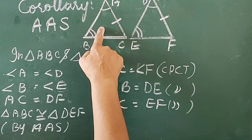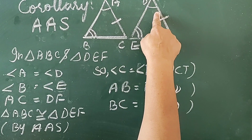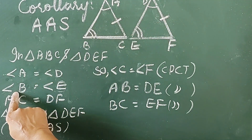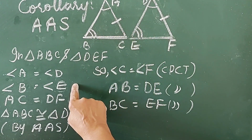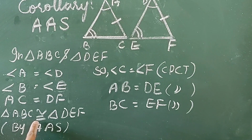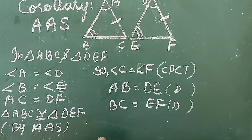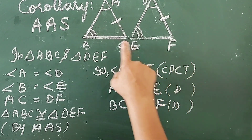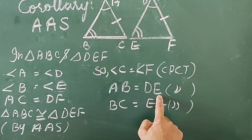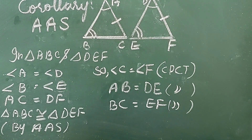Let us consider two triangles: triangle ABC and triangle DEF. From the figures we can write: angle A equal to angle D — given; angle B equal to angle E — given; side AC equal to side DF — given. Therefore, triangle ABC is congruent to triangle DEF by AAS. So, angle C equal to angle F by CPCT, AB equal to DE, and BC equal to EF — also corresponding parts of congruent triangles.